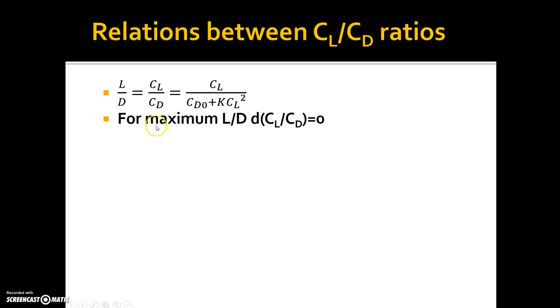So if I want to find a maximum I will differentiate it with respect to the coefficient of lift and set it equal to zero. So when I differentiate this equation this is what I get, and if it is to be equal to zero then the numerator here must be equal to zero.